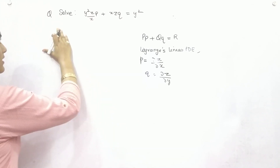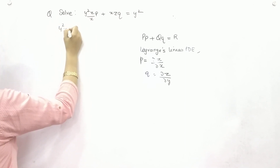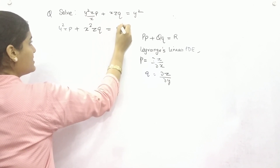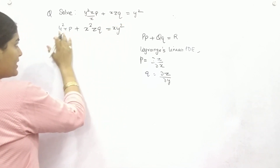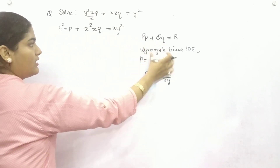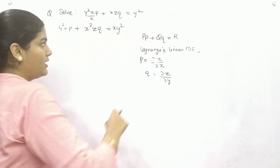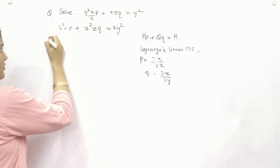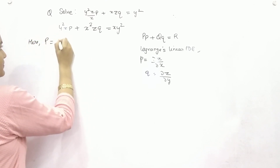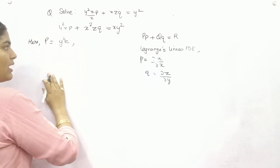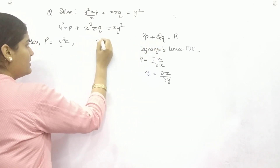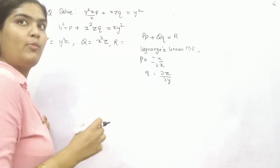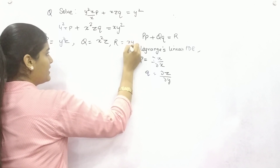Let's begin. First, simplify the given equation. You get small p times y²z plus small q times x²z equals xy². You can see this is in the form of Lagrange's linear PDE. The coefficient of small p is y²z, so this is your capital P. The coefficient of small q is x²z, so this is your capital Q. And on the right-hand side, xy² is your R.